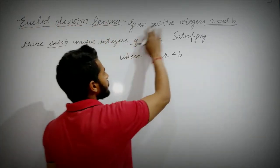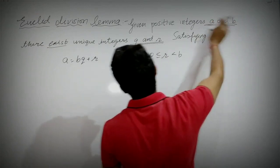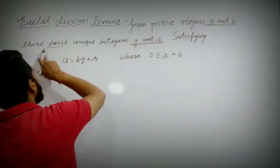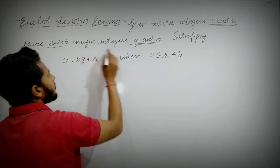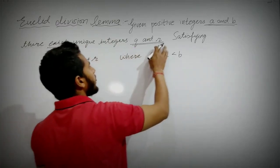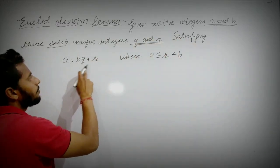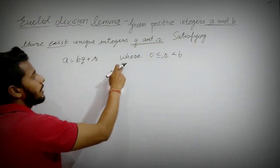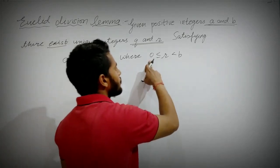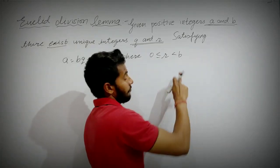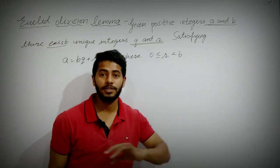Euclid's Division Lemma: Given positive integers a and b, there exist unique integers q and r satisfying a = bq + r, where r is greater than or equal to zero and less than b.